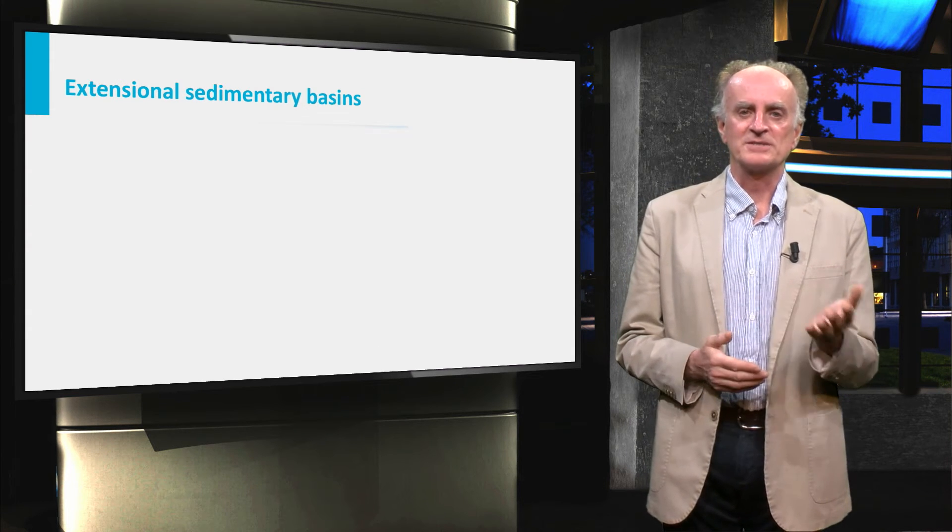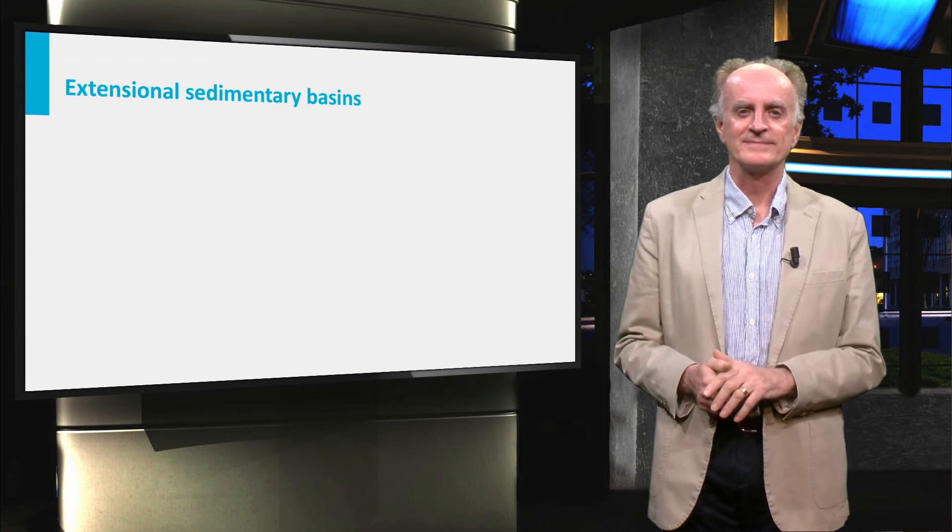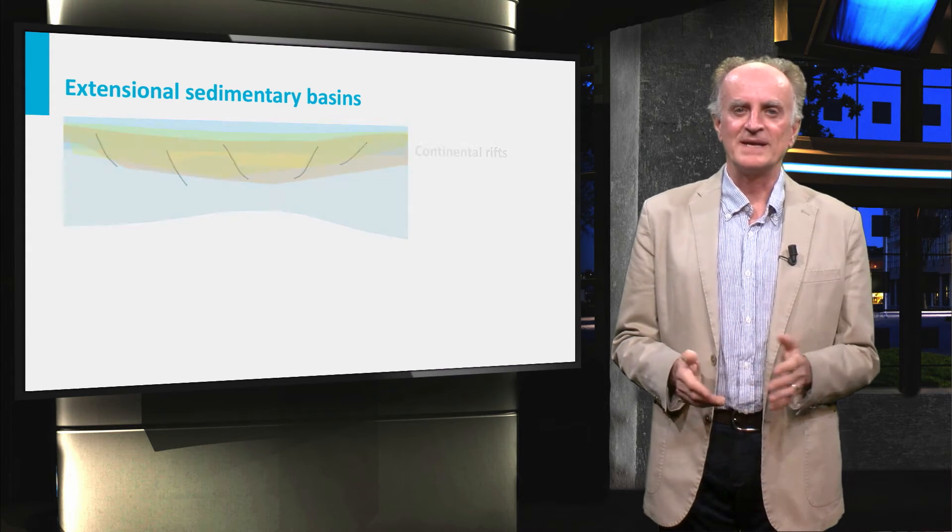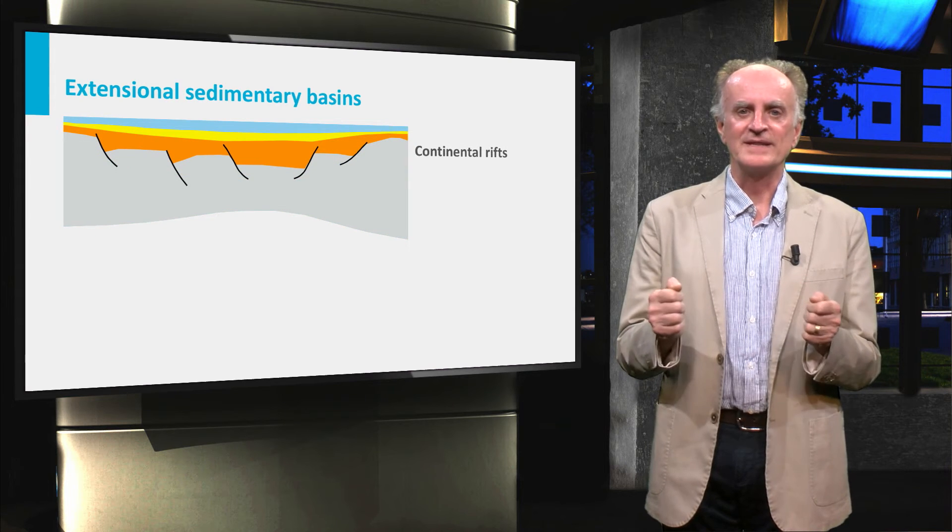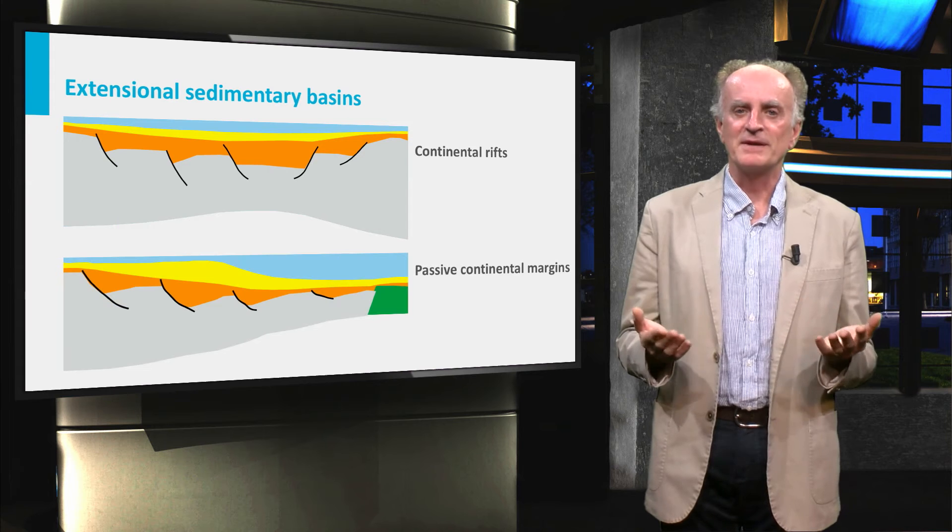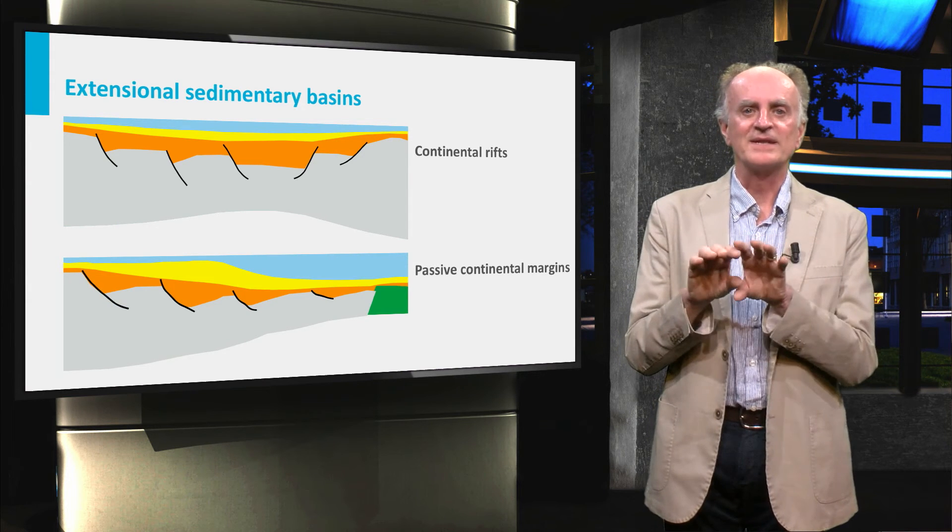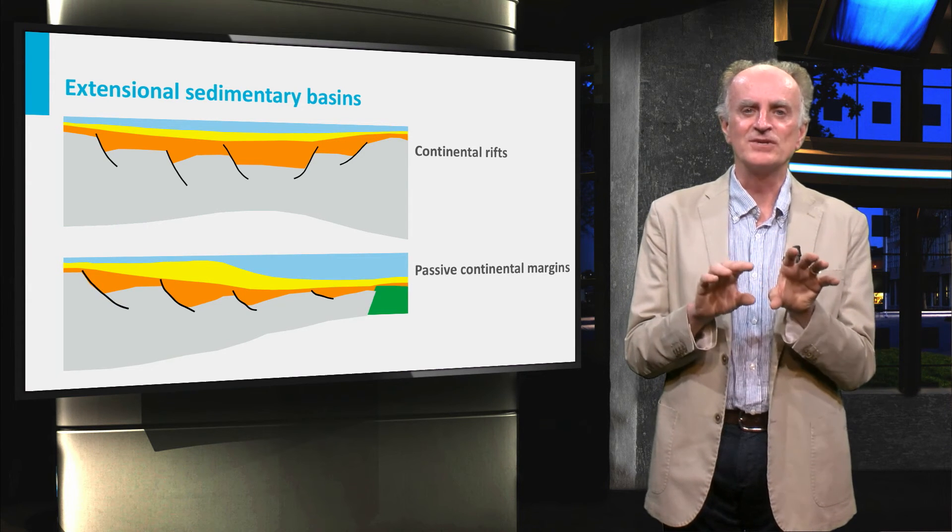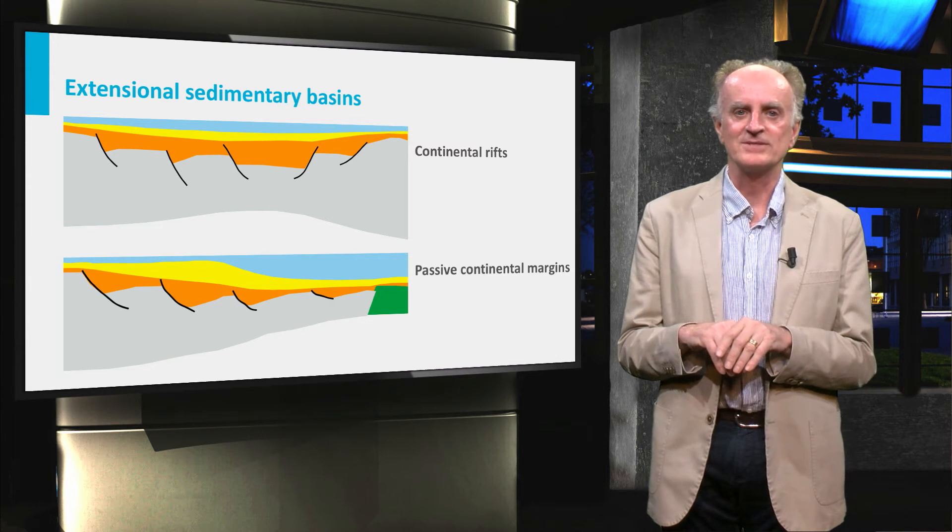The first type of sedimentary basins we will look at are extensional basins. Here the accommodation space is created by the extension of the lithosphere. Extensional basins begin forming continental rifts. If extension continues, the lithosphere becomes so thin that it will break and eventually lead to the formation of a passive continental margin.